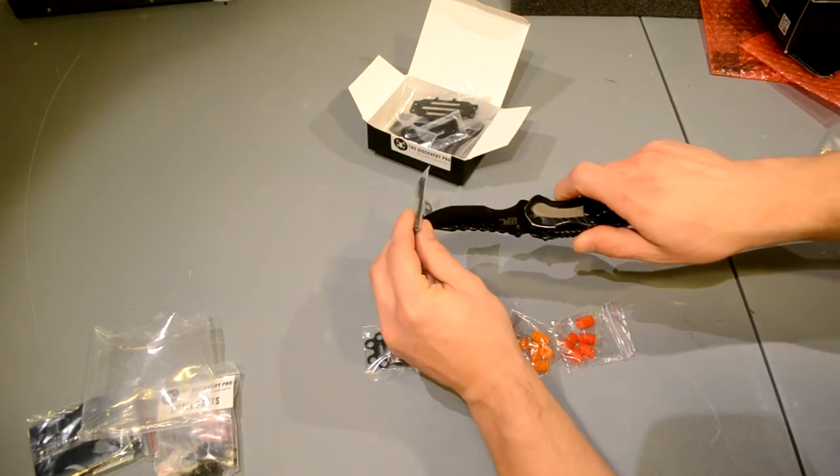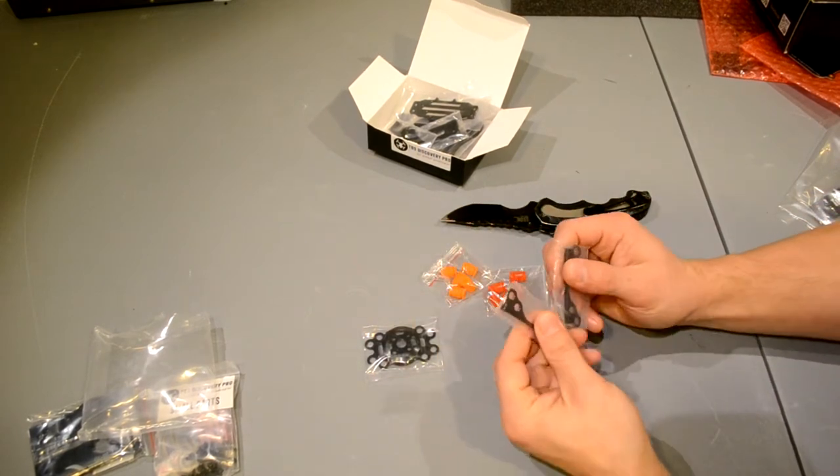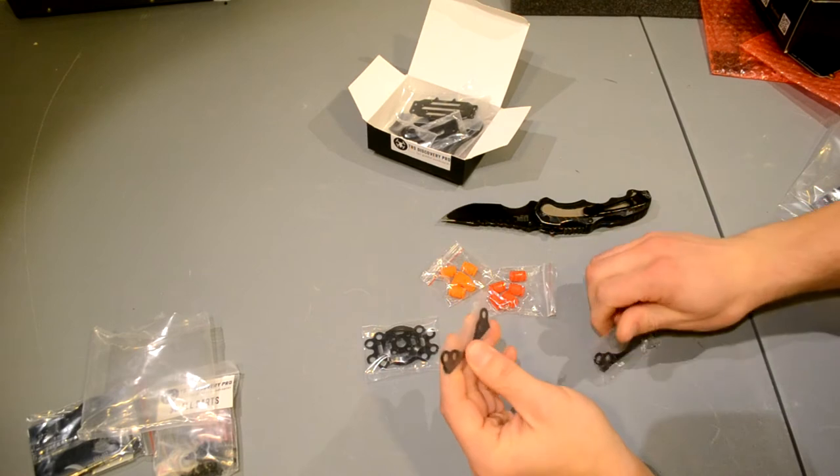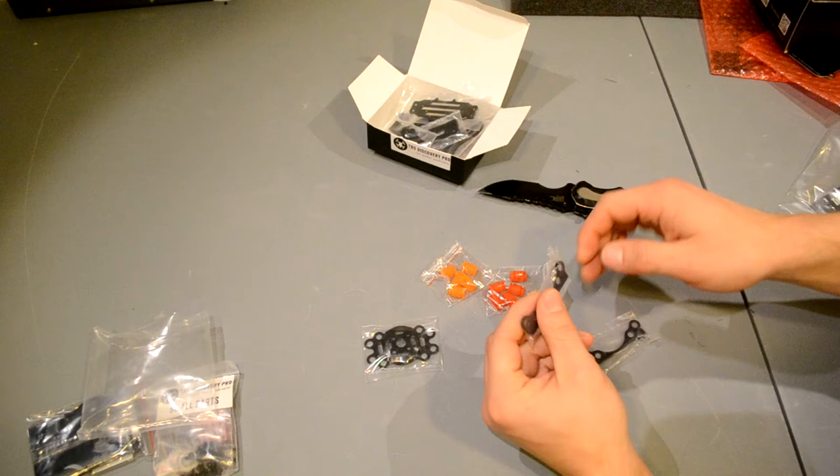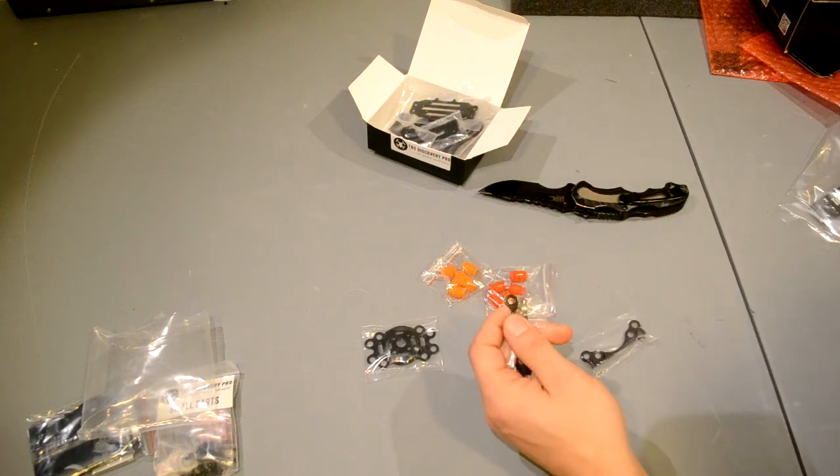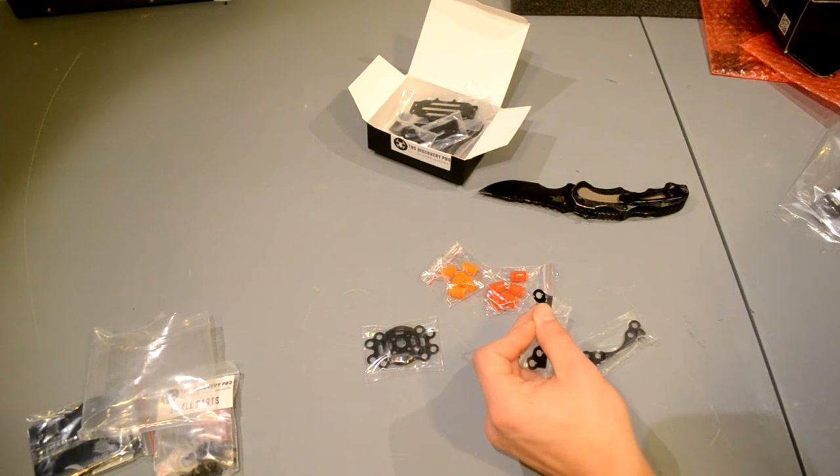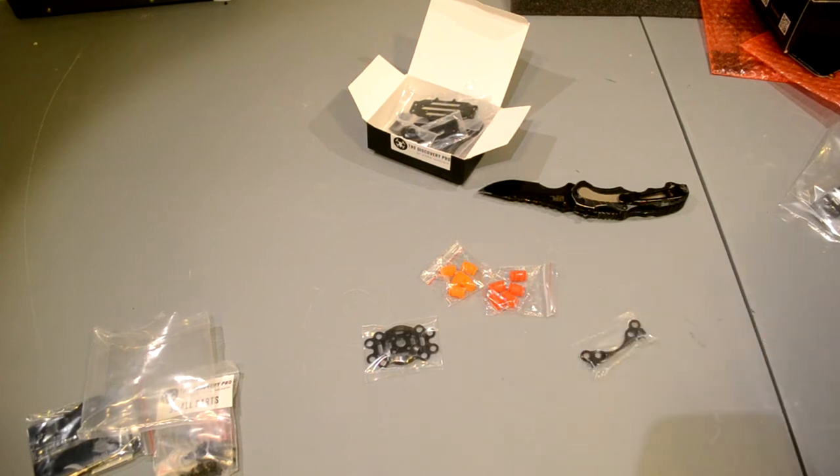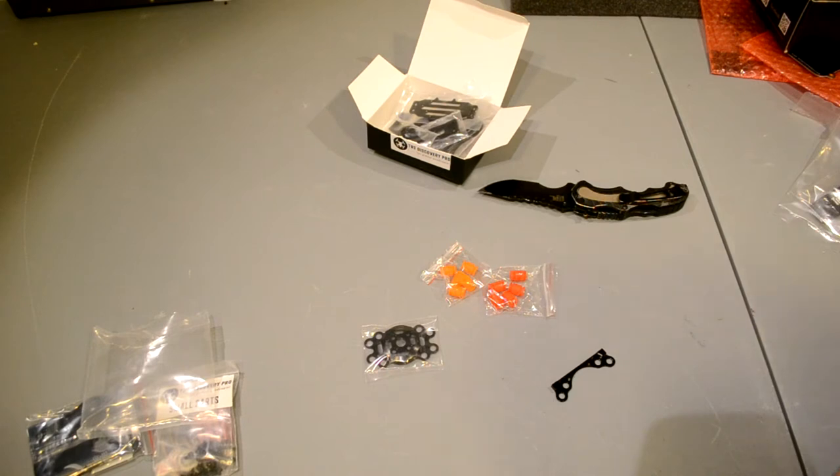So they offer some different layout configurations for these vibration dampeners for people who might be flying different cameras. Now because I'm going to be flying a GoPro Hero 3 Black Edition, on the manual they recommend 4 Orange and 4 Red. Now they also recommend for the Hero 3, 4 Orange and 4 Orange, so going all orange.